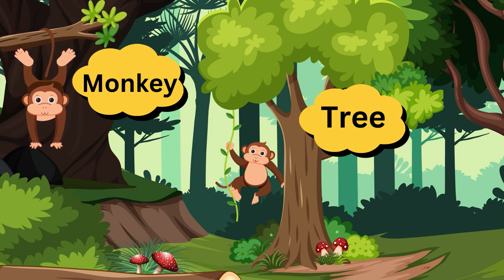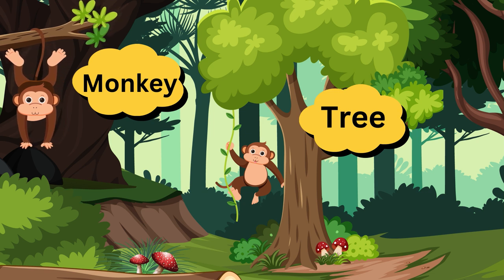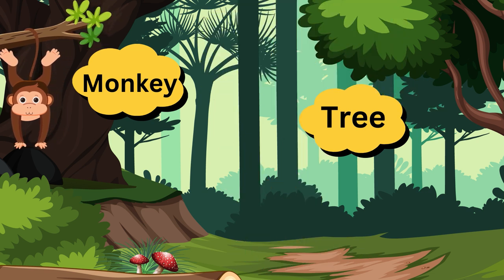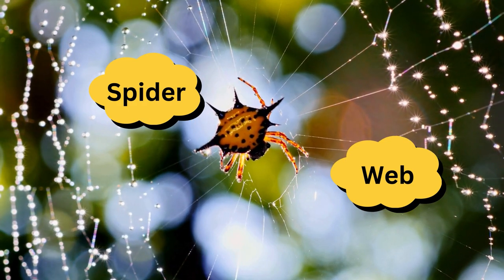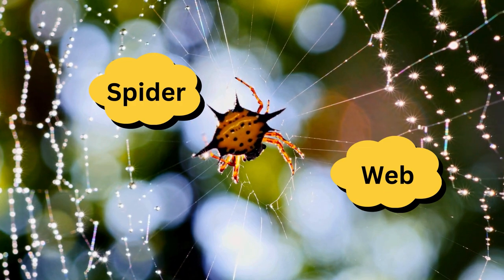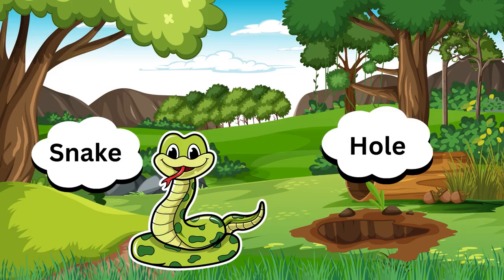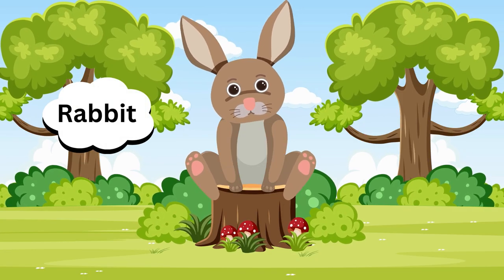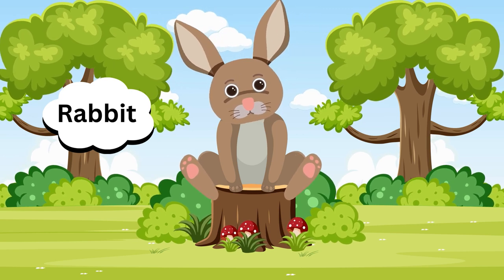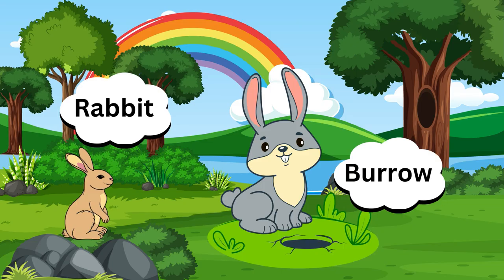Monkey lives in a tree. Monkey — tree. Spider. Spider lives on a web. Spider lives on a web. Snake. Snake lives in a hole. Snake lives in a hole. Rabbit. A rabbit lives in a burrow. A rabbit lives in a burrow.